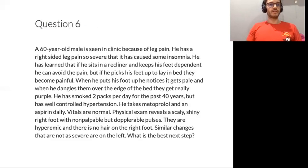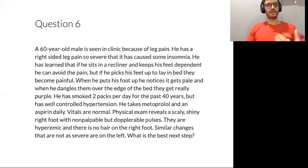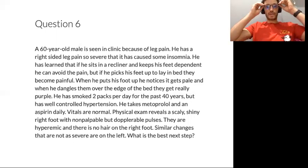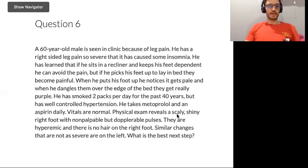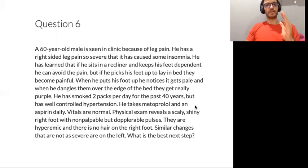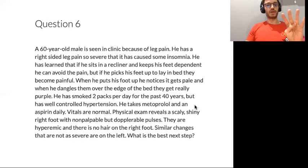Next question. A 60-year-old male seen in the clinic because of leg pain. He has resting leg pain — manifestations of peripheral artery disease. This isn't just intermittent claudication; it's resting leg pain. The question asks for the best next step. Options are: A, arterial Doppler with ankle brachial index; B, angiogram; C, cilostazol; D, clopidogrel; and E, smoking cessation.